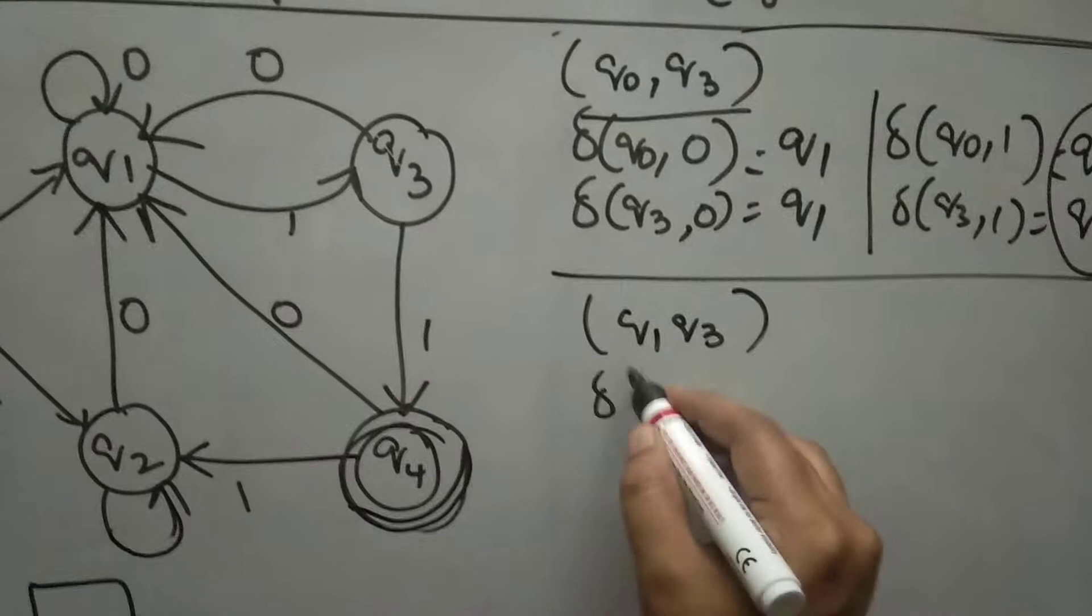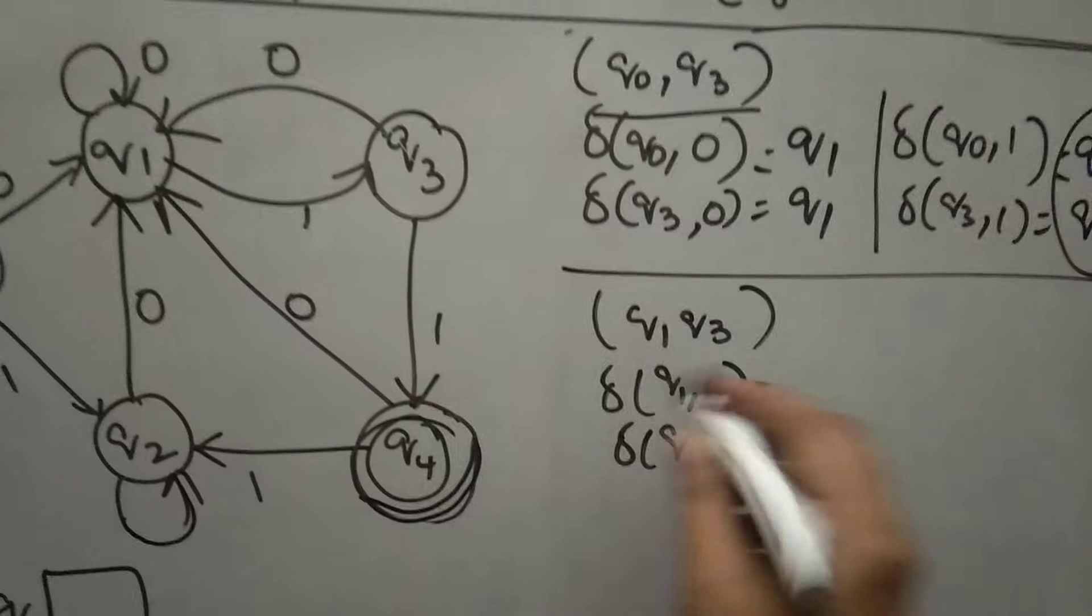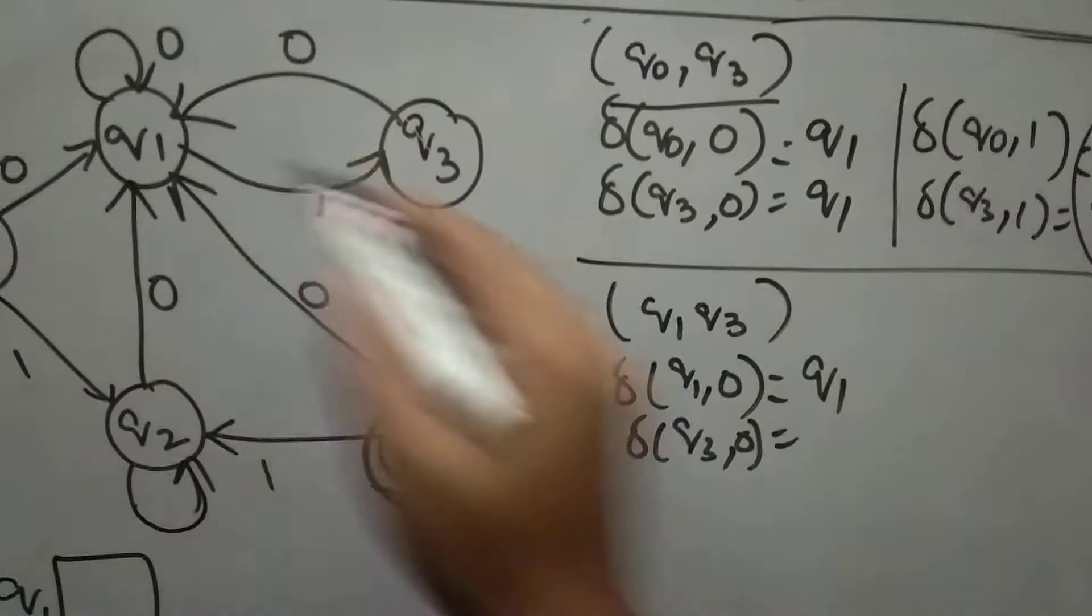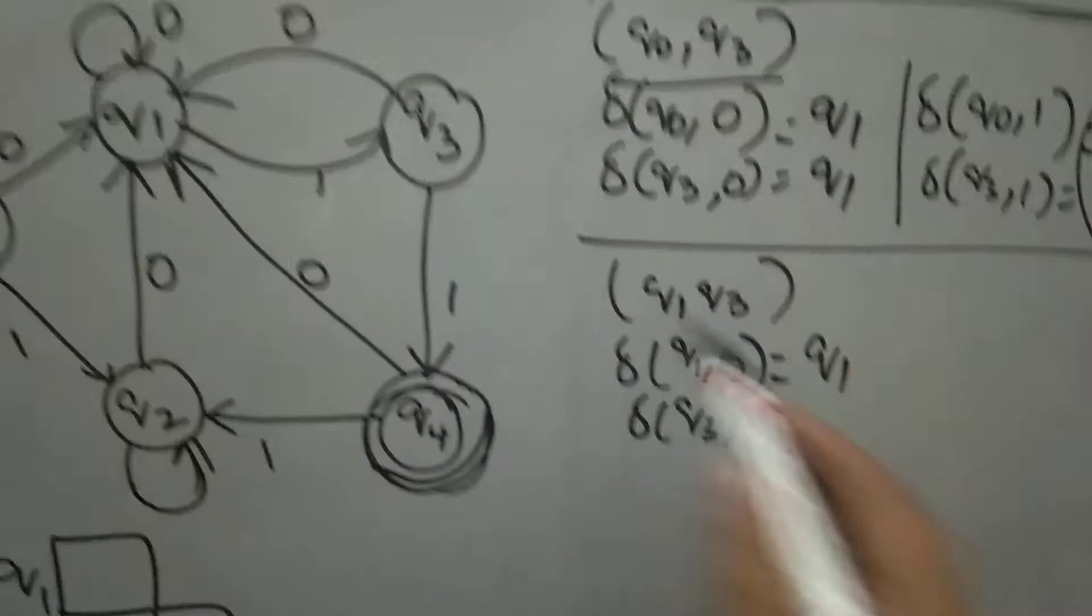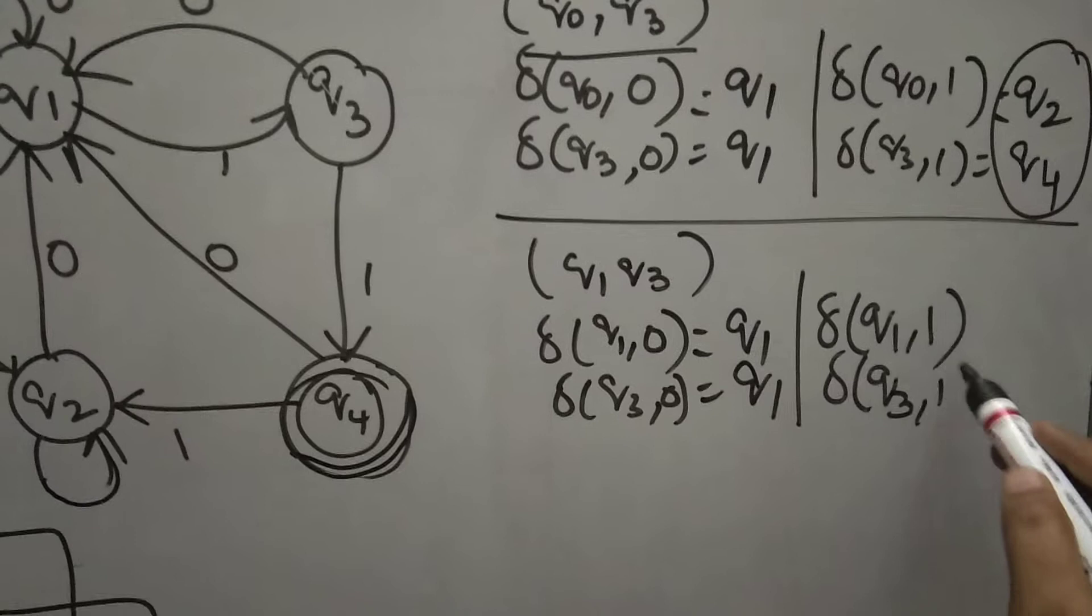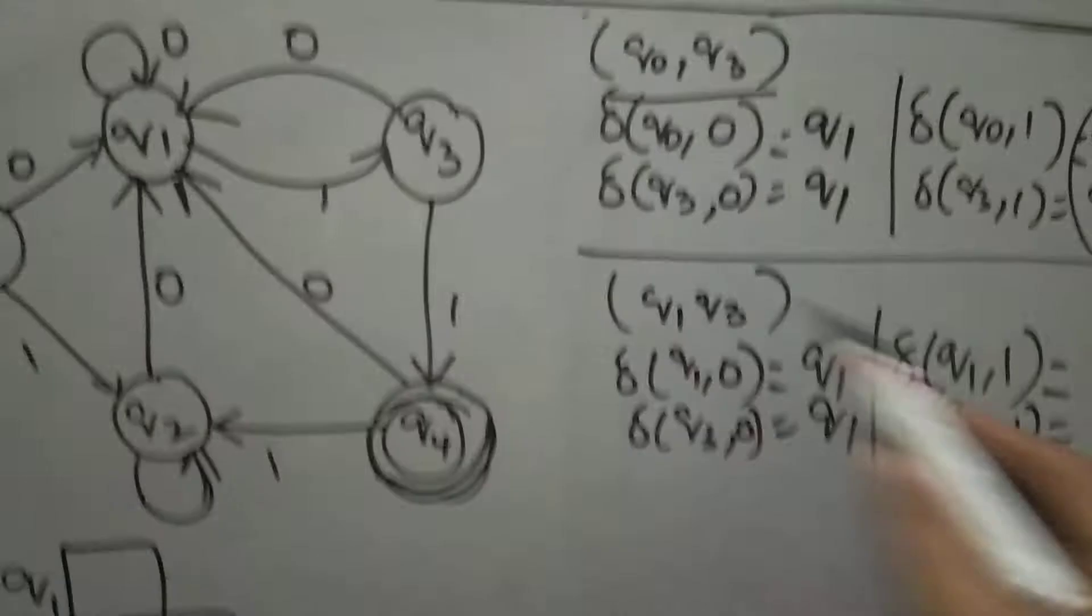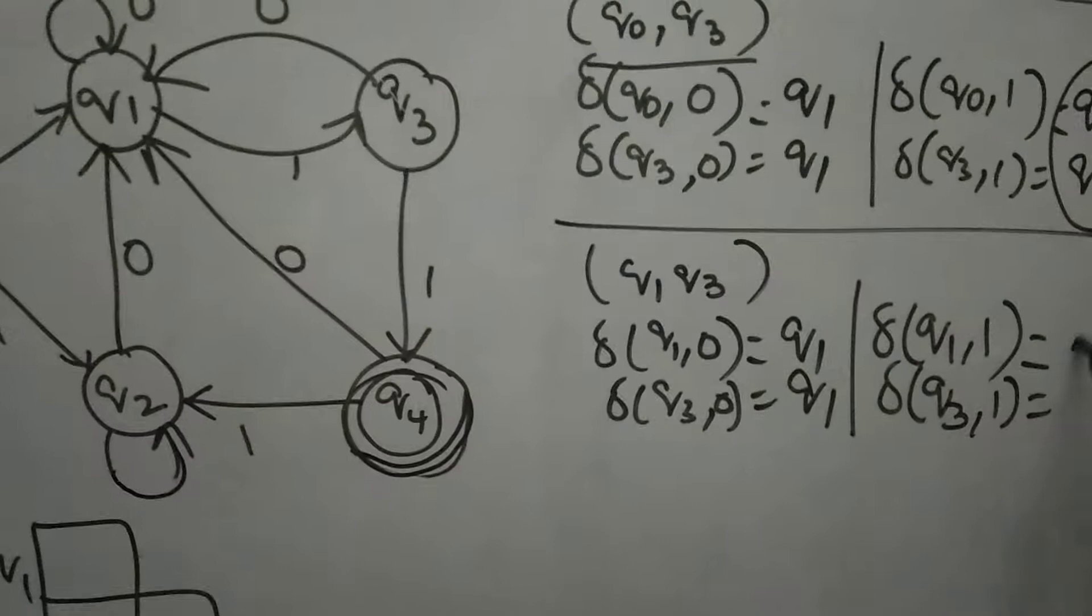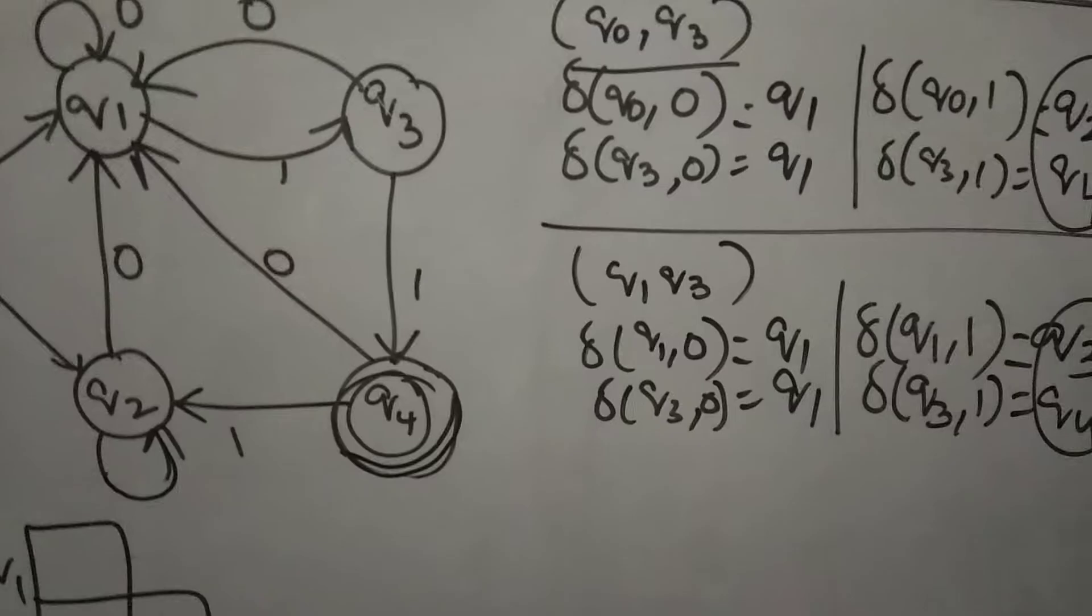Now check for Q1, Q3. Delta of Q1 upon 0, Q3 upon 0. Q1 upon 0 is Q1. Q3 upon 0 is also Q1. Q1, Q1 is not marked. Go for another input alphabet, that is 1. Q1 upon 1 is Q3. Q3 upon 1 is Q4. Check whether it is marked or not. Q3, Q4 is marked, so you can mark Q1, Q3.